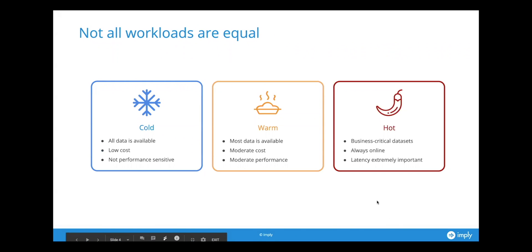Let's talk about the temperature gradient. Not all workloads are equal, and this temperature gradient concept is how we think about building data architectures. Cold is the farthest on the left. The idea behind cold data is that everything's available — it's like the default. You can think of cold data as the stuff you're storing in HDFS, S3, cloud storage, or wherever your data lake is.